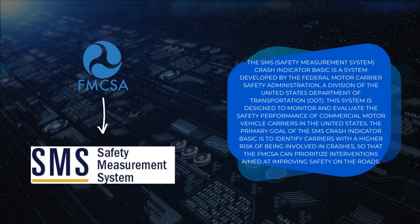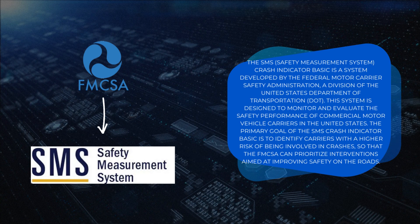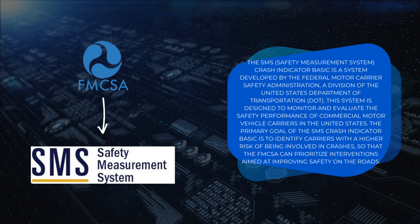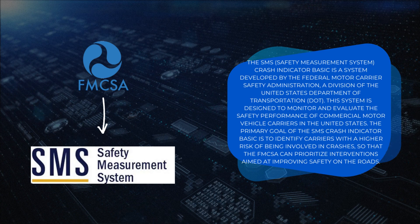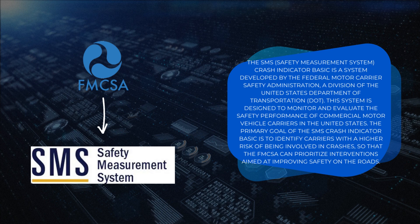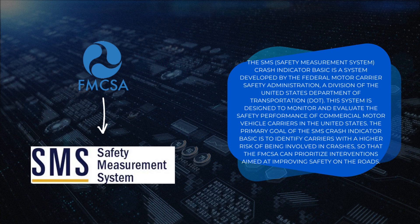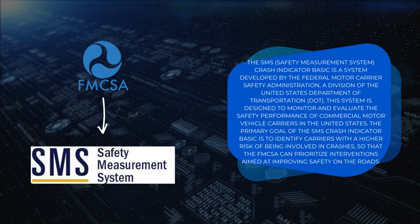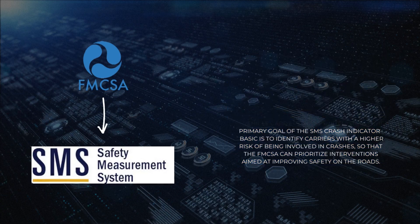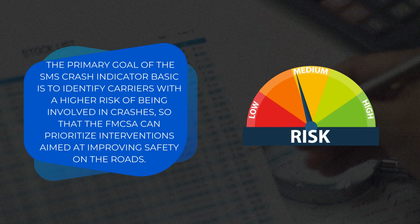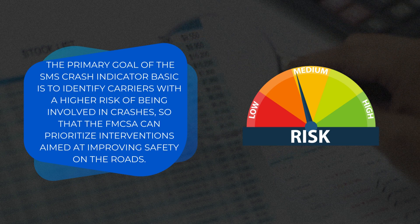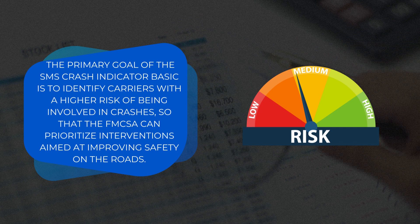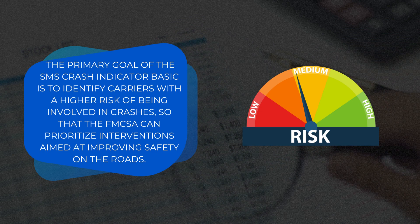The Crash Indicator BASIC is a system developed by the Federal Motor Carrier Safety Administration, a division of the United States Department of Transportation (DOT). This system is designed to monitor and evaluate the safety performance of commercial motor vehicle carriers in the United States. The primary goal of the SMS Crash Indicator BASIC is to identify carriers with a higher risk of being involved in crashes, so that the FMCSA can prioritize interventions aimed at improving safety on the roads.